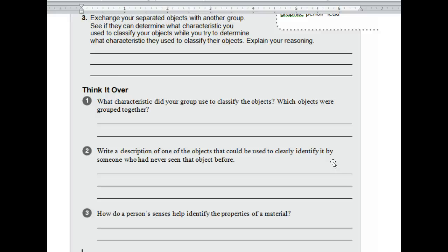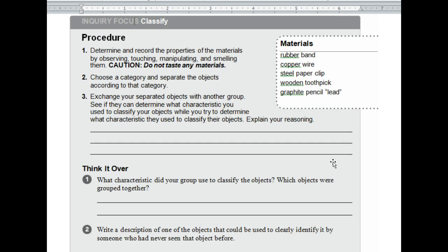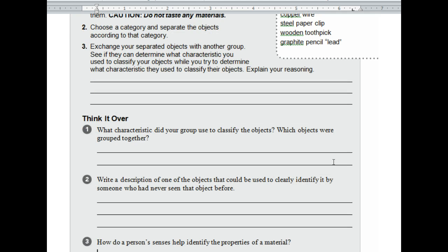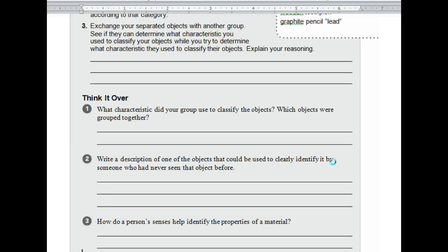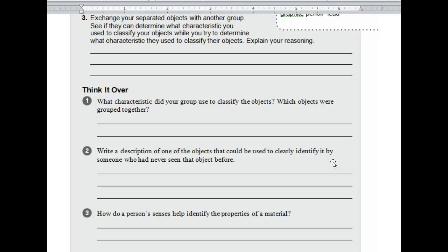Write a description of one of the objects that could be used to clearly identify it by someone who had never seen the object before. So you have to pick one of these objects up here: a rubber band, the copper wire, steel paper clip, wooden toothpick, or the chalk, and describe it to someone who has never seen it before, doesn't know what you're describing, but would be able to identify it based on how you describe it.